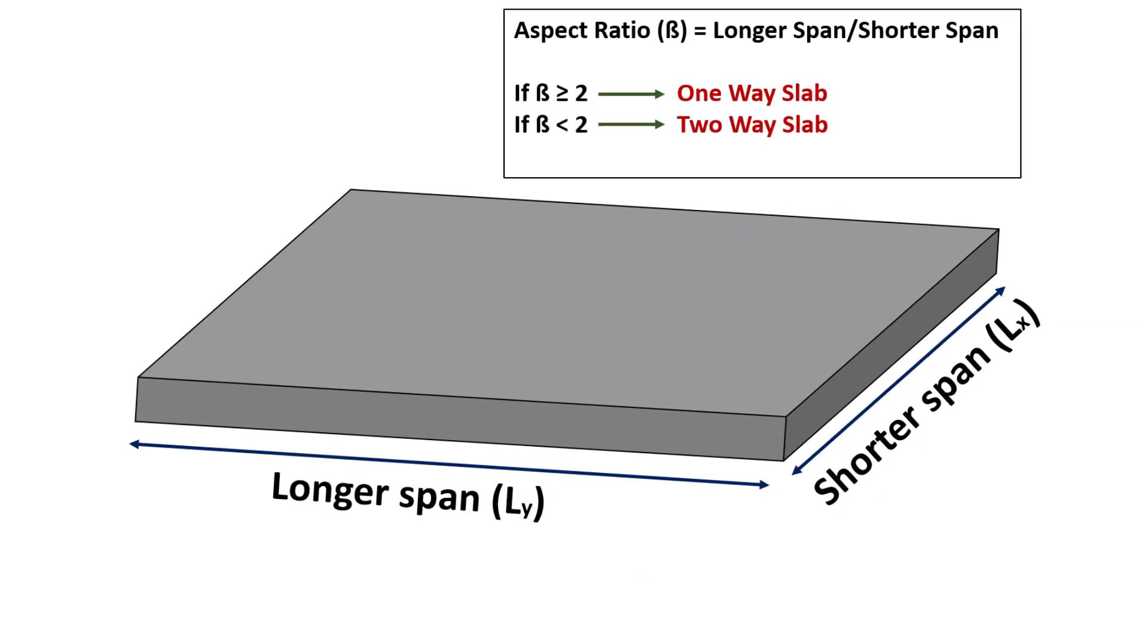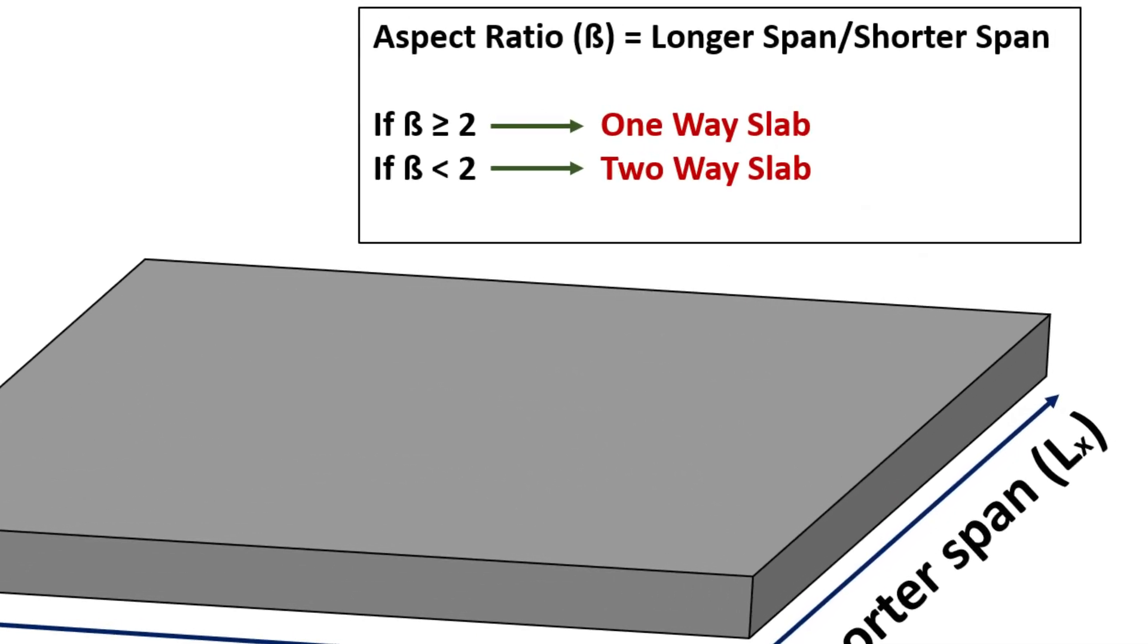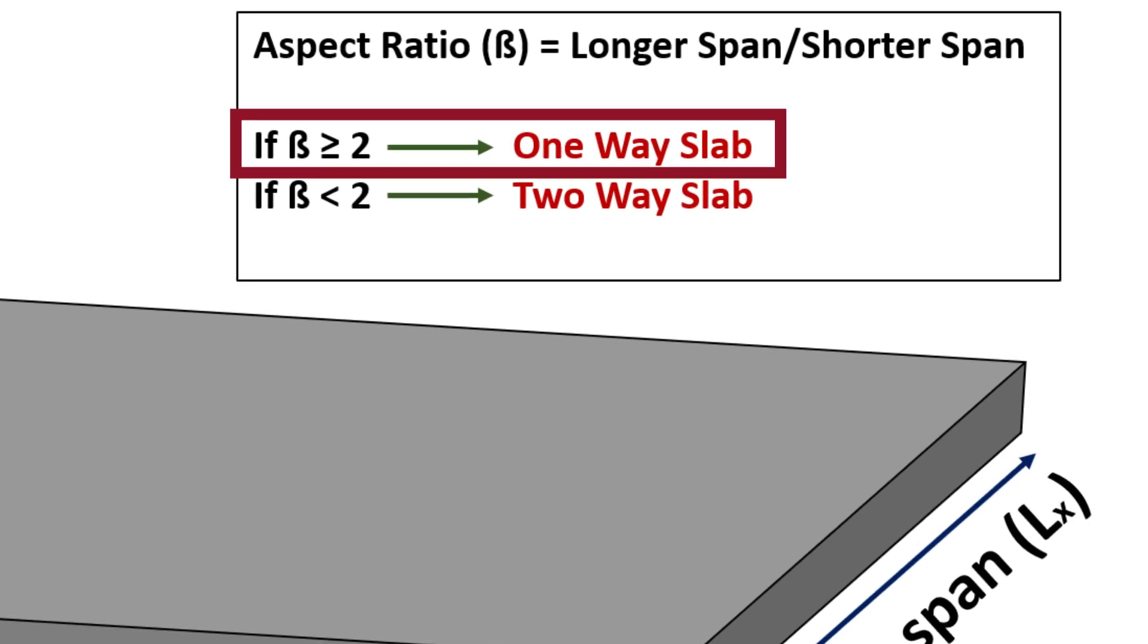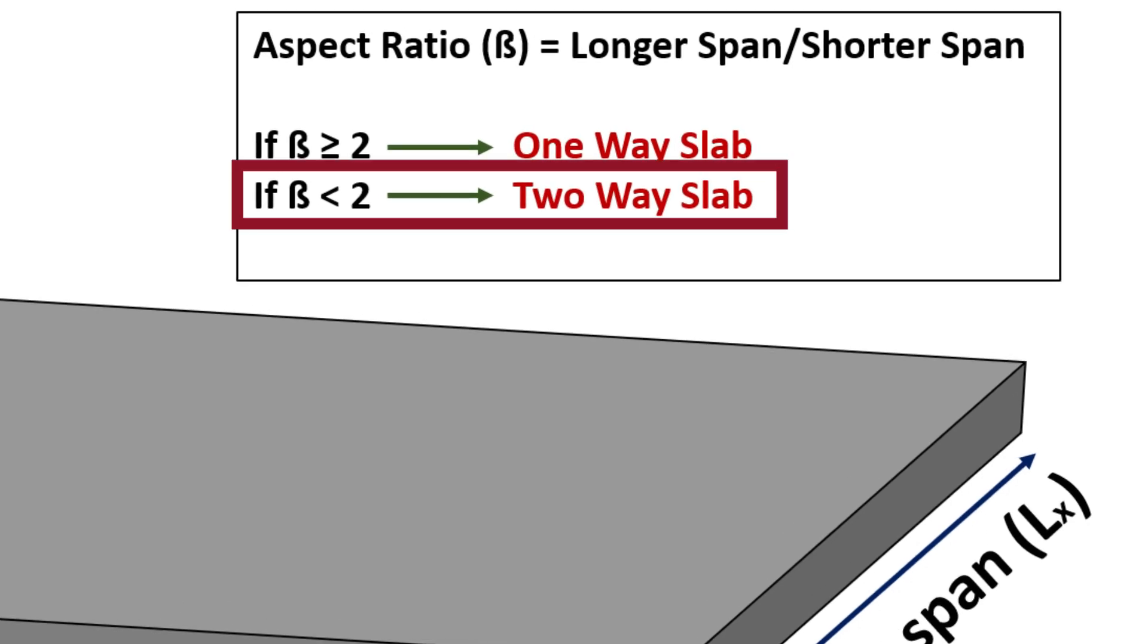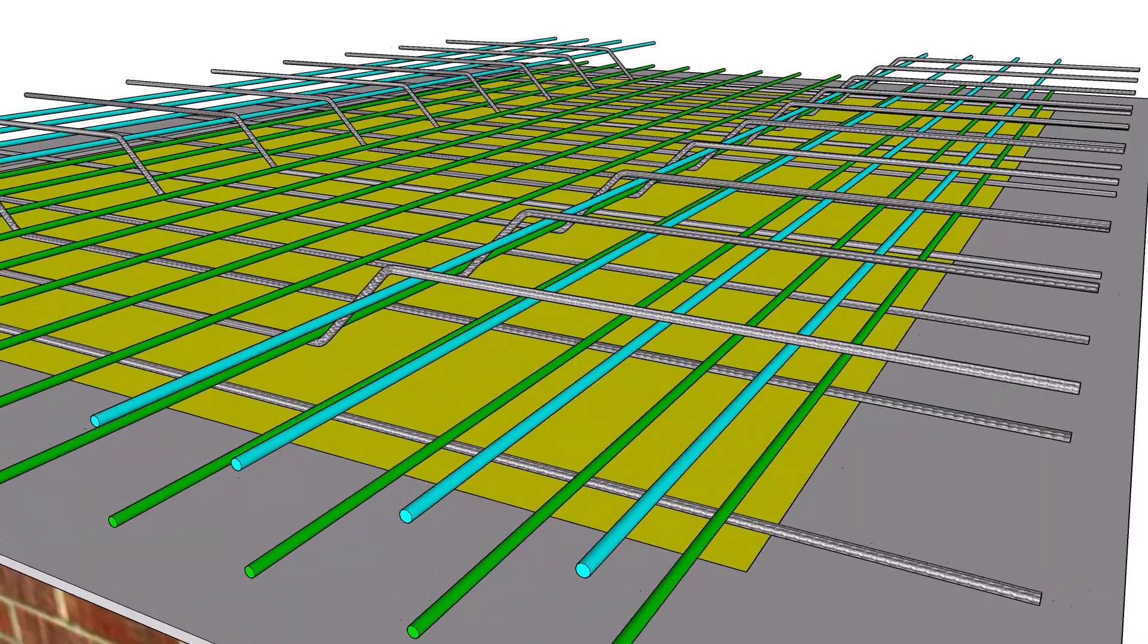To classify a slab as one-way, its aspect ratio, that is the ratio of longer span to the shorter span, must be greater than or equal to 2. If the aspect ratio is less than 2, the slab is considered as a two-way slab. Now, let's discuss the types of bars used in a one-way slab.